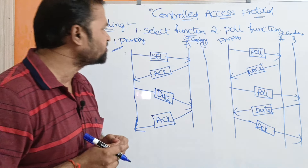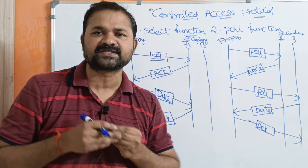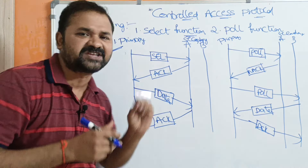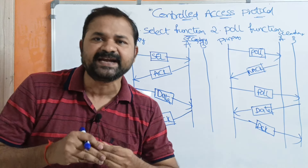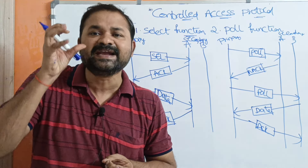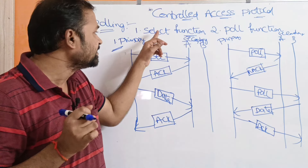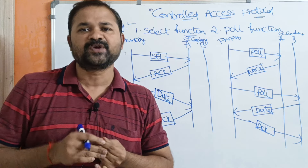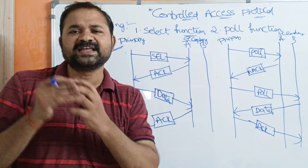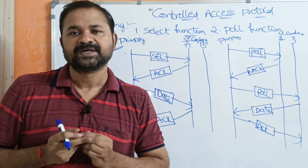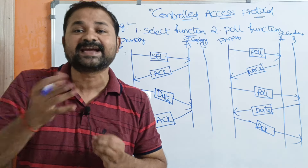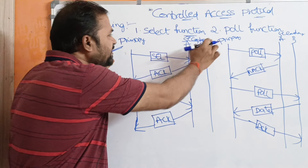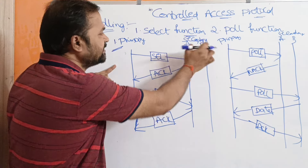The primary device mainly uses two functions: the select function and the poll function. Before sending data, the primary device sends a select function to the secondary device in order to know the availability of that secondary device. Here, the primary device has two secondary devices, A and B.